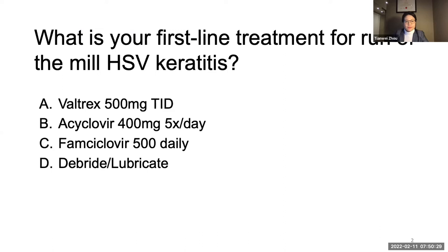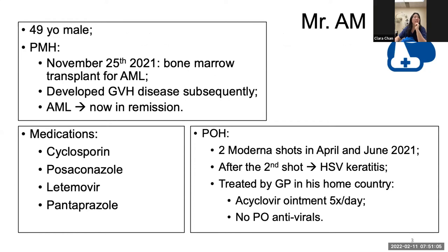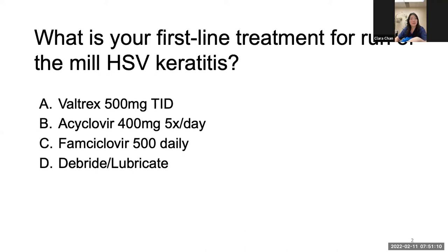Here's a poll question for everyone. What is your first-line treatment for run-of-the-mill HSV keratitis? Is it Valtrex 500 TID, Acyclovir 400 five times a day, Famcyclovir 500 daily, or debridement and lubrication? Seems to be a bit of a split here. Most people choose Valtrex. That's interesting. Valtrex is certainly a newer antiviral, and with the percentages, we see people moving toward use of Valtrex. We'll dive right into a case that will explore some rationale behind Valtrex versus Acyclovir.